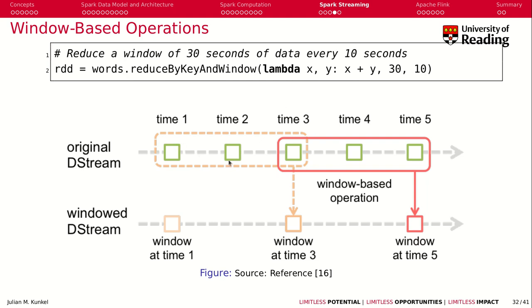How does this look like? Well, at the given time, at time 5, you look back basically 30 seconds, take this time, and then apply your operation on it to produce an output. But there is an overlap, because we say we want to run this every 10 seconds.